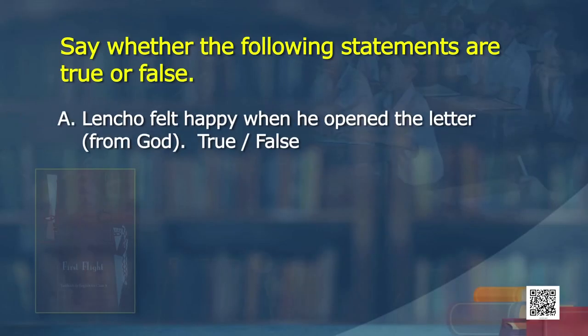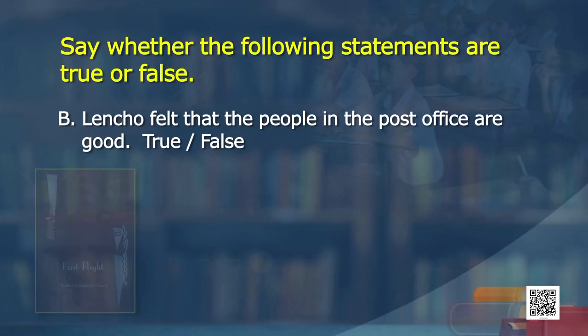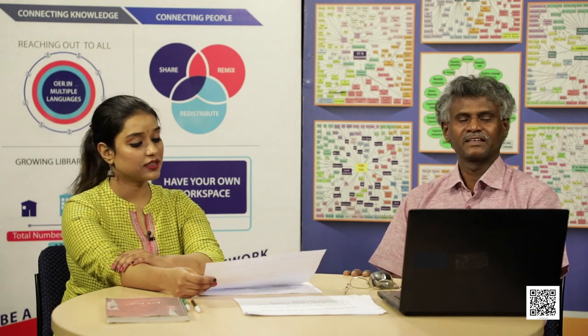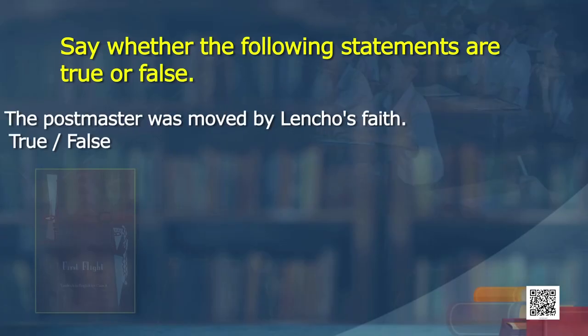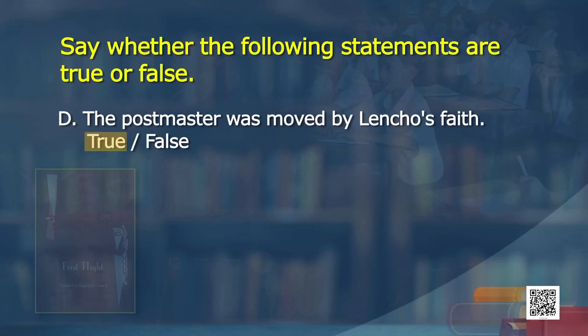Say whether the following statements are true or false. Lencho felt happy when he opened the letter from God — false. Why? Because he was expecting 100 pesos but got only 70 pesos. Lencho felt that the people in the post office are good — false. He calls them a bunch of crooks, because he thought they had taken away the money given by God. Lencho felt the post office people are crooks — true. The postmaster was moved by Lencho's faith — true.